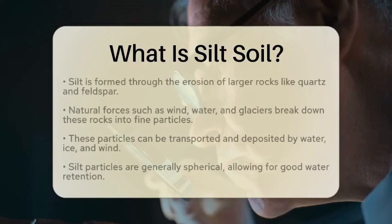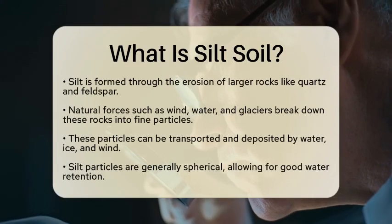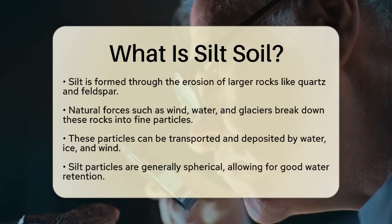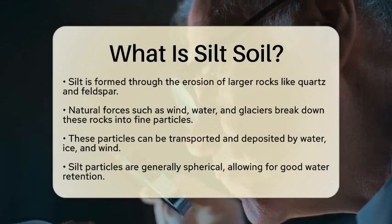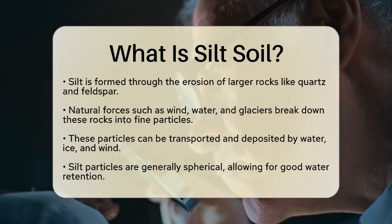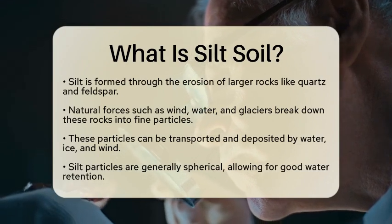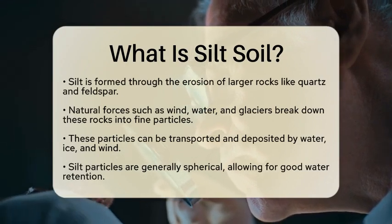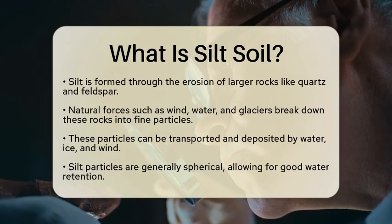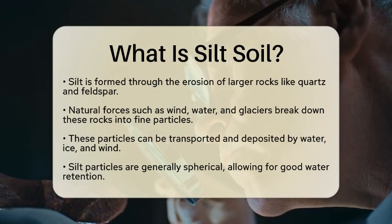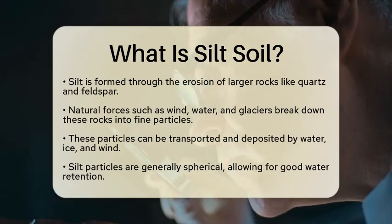Now, let's talk about how silt is formed. Silt is created through the erosion of larger rocks, such as quartz and feldspar. Natural forces like wind, water, and glaciers grind these rocks down into fine particles. These particles can be transported and deposited by water, ice, and wind, often appearing as sediment mixed in suspension with water.